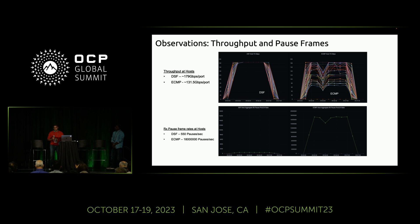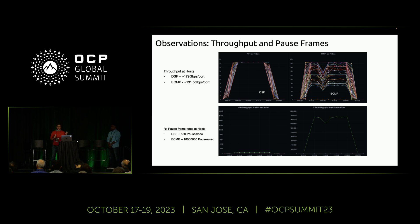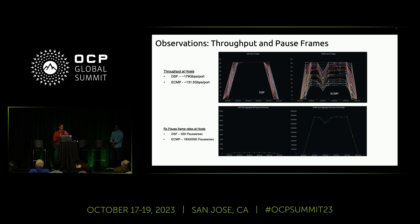We had telemetry at every stage — on the routers and on the hosts. We were looking at link utilization, packets sent and received, pause frames, and dropped packets. Almost every aspect of the network path was monitored via telemetry. You literally need a time series of this data — there is no way to debug a problem by looking at instantaneous counters alone. You must have a time series of all your telemetry data available.